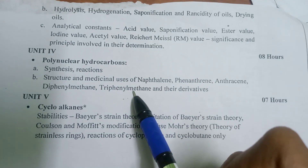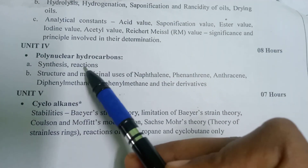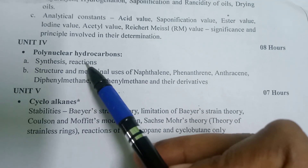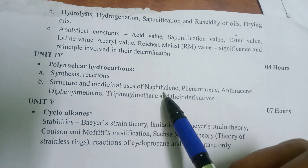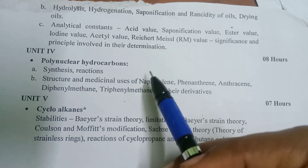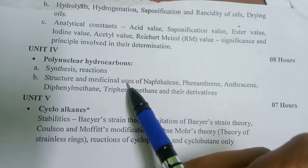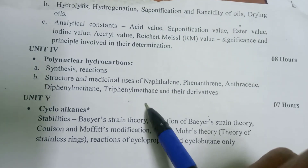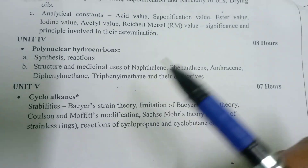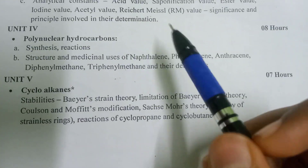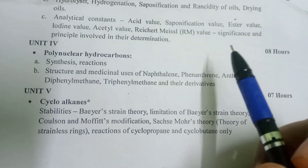The benzene ring is attached. The synthesis is covered. Chemical reactions include halogenation, nitration, and alpha-substitution. The naphthalene and its uses — alpha-naphthalene and beta-naphthalene derivatives, their structures and uses. Phenanthrene, anthracene, diphenylmethane, and triphenylmethane are also covered — their structures and uses.